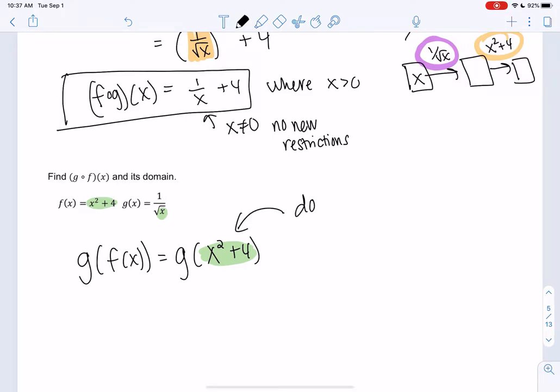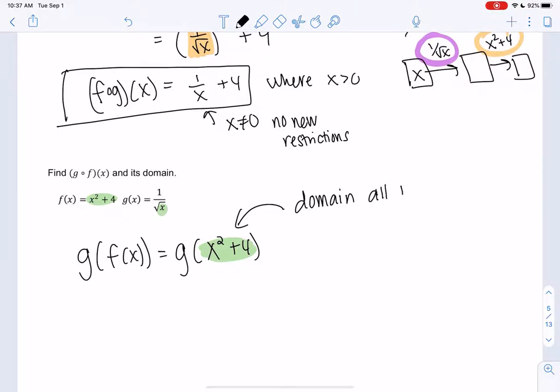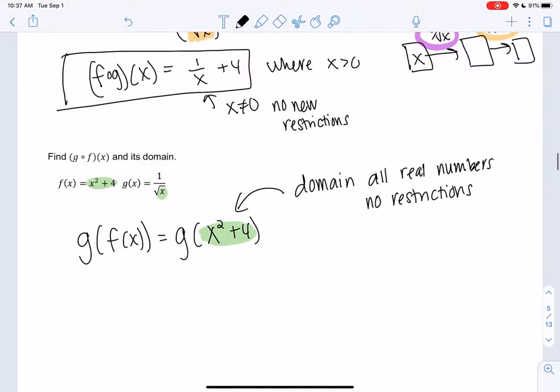So first, what's the domain of x squared plus 4? It's a polynomial, so there's no restrictions, right? All real numbers. So no restrictions. So so far, we can plug in any x.